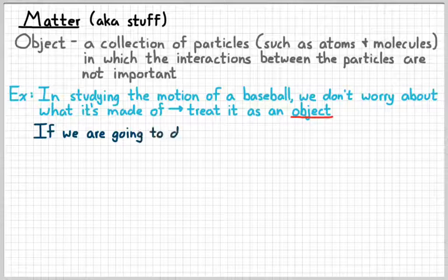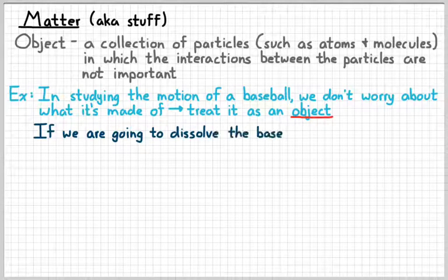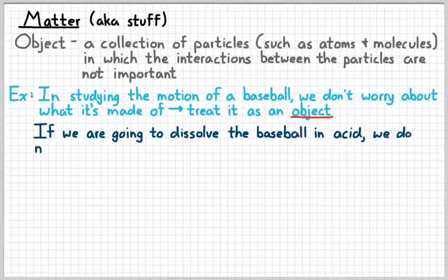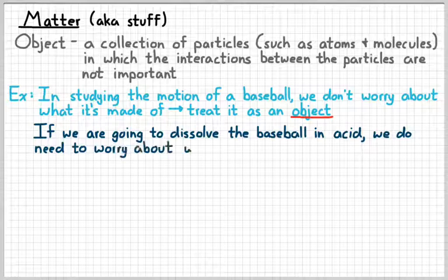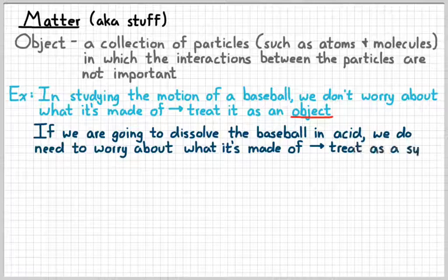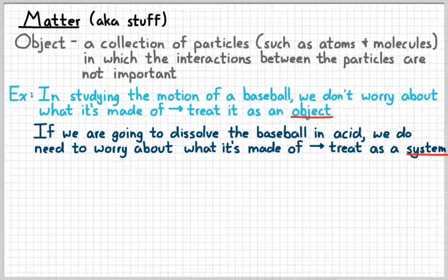However, if we're doing something different with a baseball, like we're going to try to dissolve it in acid, for example, then we do need to worry about what it's made out of, and we can't just treat it like an object. In that case, we would treat it as a system. We'll come back and define that term here in just a few minutes.